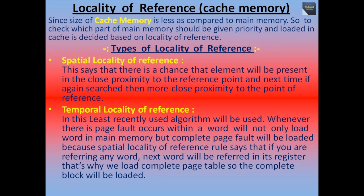Cache memory, also called cache, is a supplementary memory system that temporarily stores frequently used instructions and data for quicker processing by the central processor of a computer. The cache is an extension of a computer's main memory — both main memory and cache are internal random access memories that use semiconductor-based transistor circuits. Cache holds a copy of only the most frequently used information or program code stored in main memory. The smaller capacity of the cache reduces the time required to locate data and provide it to the computer for processing.